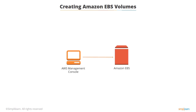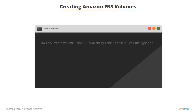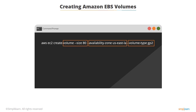You can create an EBS volume in the management console. When you create a new EBS volume, you need to define the region and the availability zone for it. You can also create new volumes through Amazon API or command line tools. The screen displays an example of creating a volume with the AWS CLI create volume command. Note that the size of the volume, availability zone, and the volume type is defined in the command. The region is assumed from the default settings of AWS CLI.